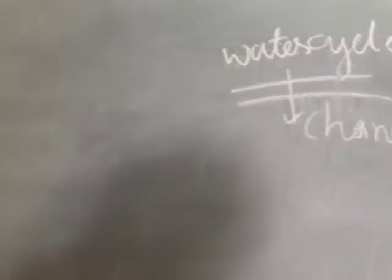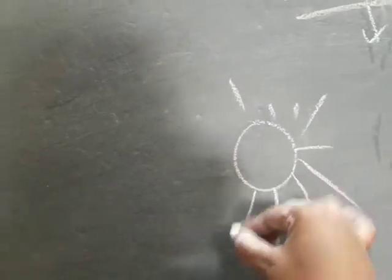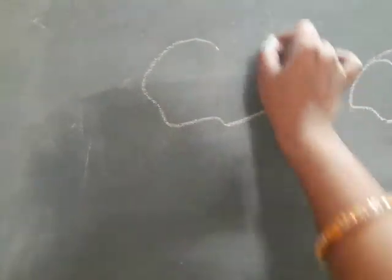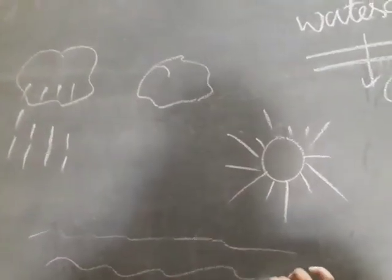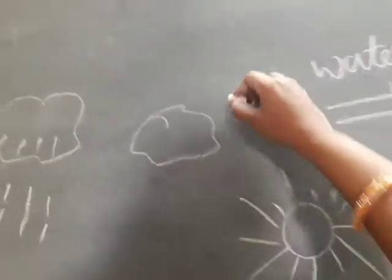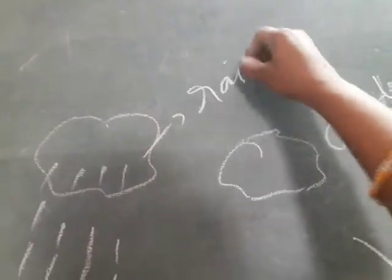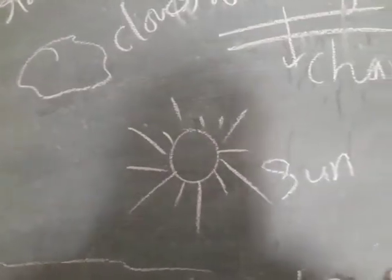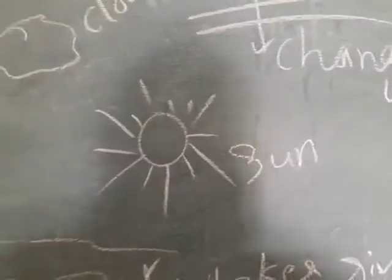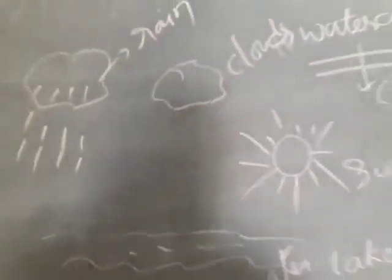Let us read how water changes its form. Look at this picture — here we have the sun, clouds, rainwater, and lakes, rivers and ponds. Can you understand this picture?